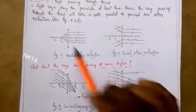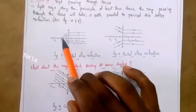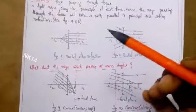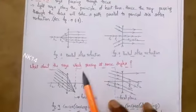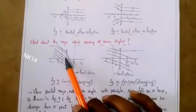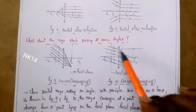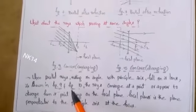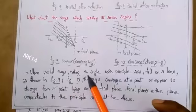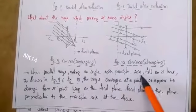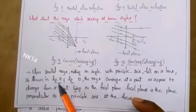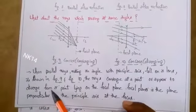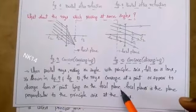Now a question arises about rays traveling at angles other than along the principal axis or through the optic center. When parallel rays making an angle with the principal axis fall on a lens, as shown in figures 9 and 10, the rays converge at a point or appear to diverge from a point lying on the focal plane.